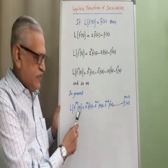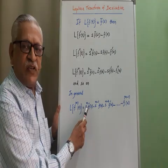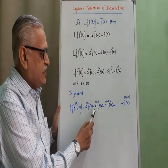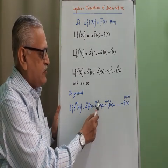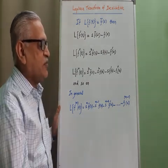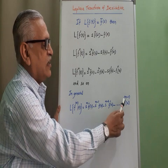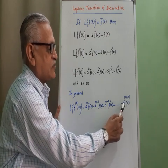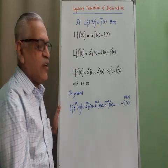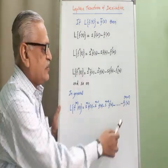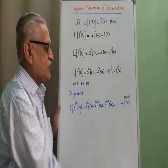The Laplace transform of the nth derivative of f(t) is s^n·F̄(s) minus s^(n−1)·f(0), with the last term being the (n−1)th derivative of f evaluated at 0.